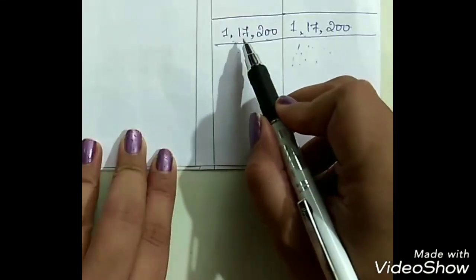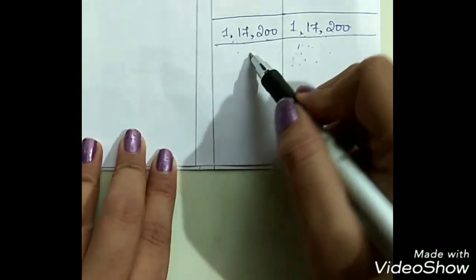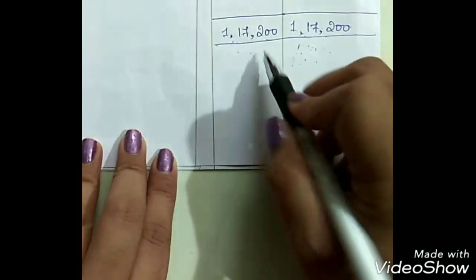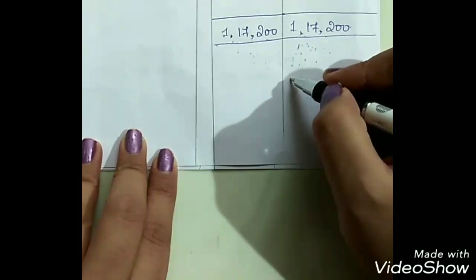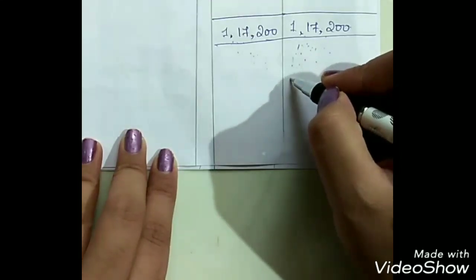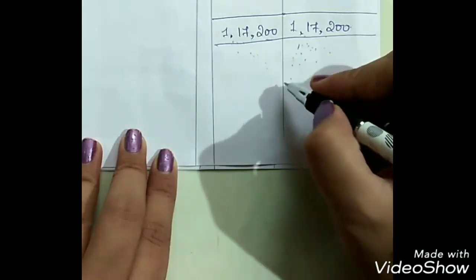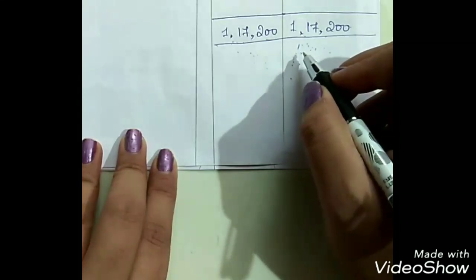Now all the transactions are completed. The total on both sides will be rupees 1,17,200. Remember: the total on the debit side and credit side should always be the same in journal entry problems. These were simple, basic, and commonly used journal entries. In my next video I will discuss another problem on journal entries, so don't forget to watch Part 2. Subscribe to the channel and press the bell button for notifications. Happy learning!